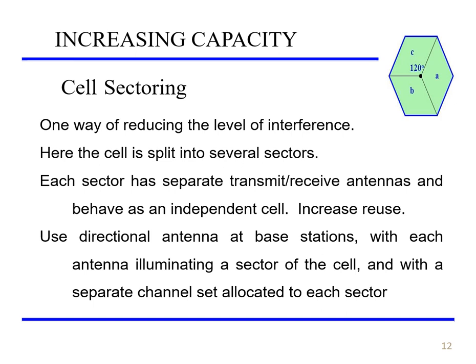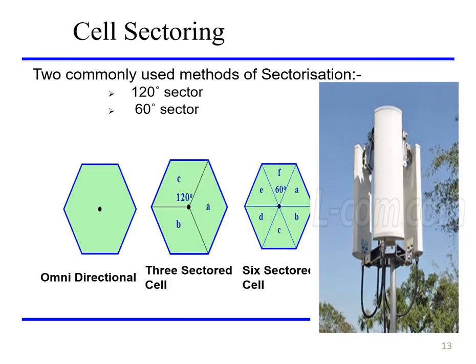Cell sectorization is used to increase the capacity of the system and reduce interference. The cell is split into several sectors, each with separate transmit and receive antennas, behaving as an independent cell. Directional antennas are used at base stations, with each antenna illuminating a sector and a separate channel set allocated to each sector. Two commonly used methods are 60-degree and 120-degree sectorization.